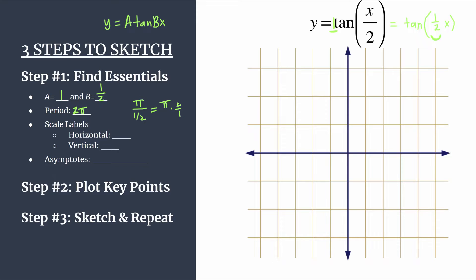Alright, next we'll find our scale labels. So for horizontal scale labels, this is what you'll label your tick marks. All you have to do is take the period and divide by four. And this will make sure that all your key points line up nicely with your horizontal tick marks. So our period is two pi. We'll divide that by four. So we'll label our horizontal tick marks counting by pi over two. And then for our vertical scale labels, you just can use A. So we'll count by ones there.